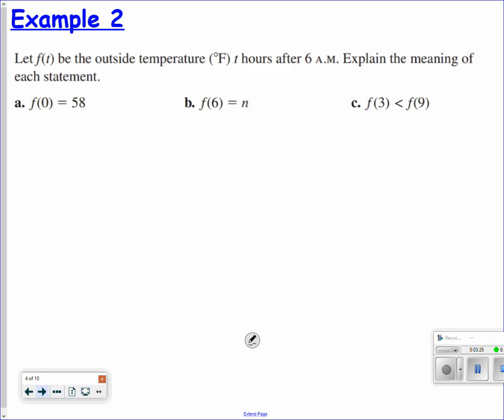Let f of t be the outside temperature in Fahrenheit t hours after 6 a.m. Explain the meaning of each statement. So f of 0 equals 58, meaning if I don't change the time at all, because it's f of t, then at 6 a.m. it's 58 degrees. That is the explanation of what's happening here. If you don't change the time at all, then that's what the temp is.